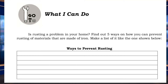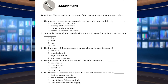For 'What I Can Do' — rusting is a problem in your home. Find 5 ways on how you can prevent rusting of materials made of iron and make a list, like the one shown in the module. You will write five ways to prevent rusting or corrosion of metals. Open your module on page 7 for the assessment. Choose and write the letter of the correct answer in your answer sheet — write only the letter. The timer starts now.